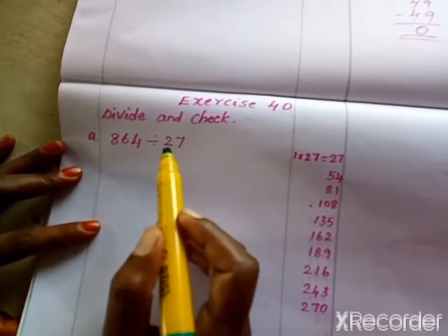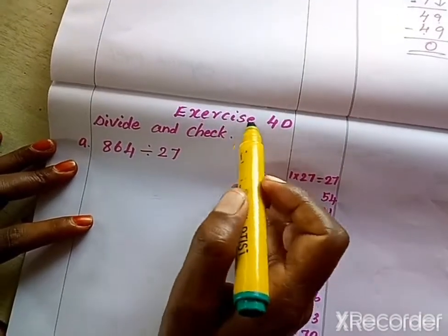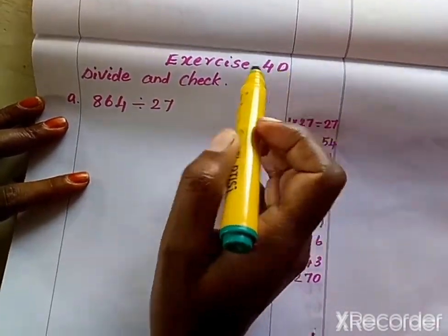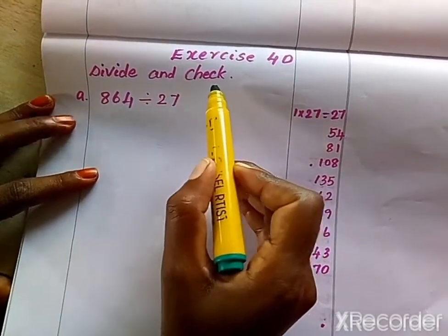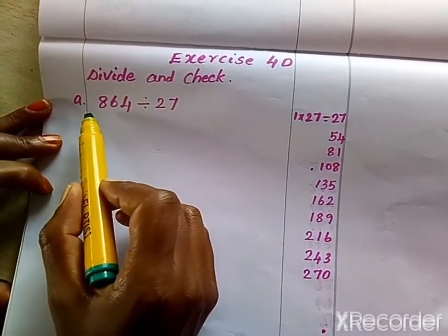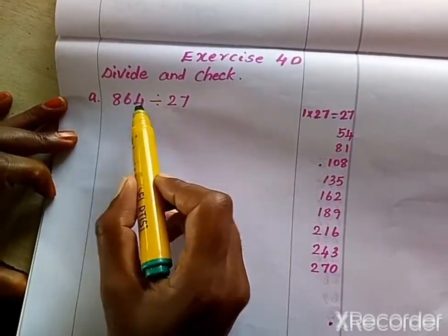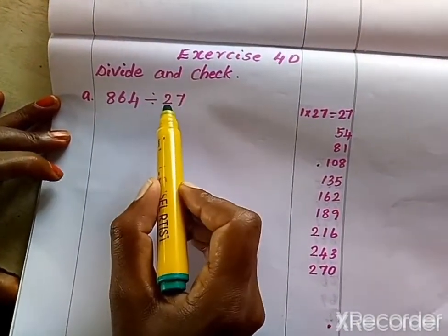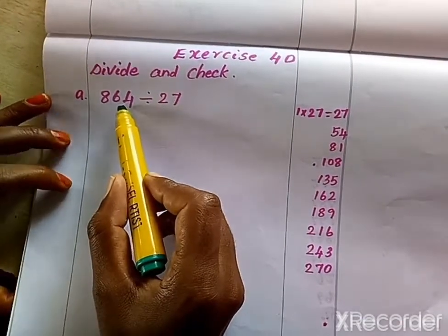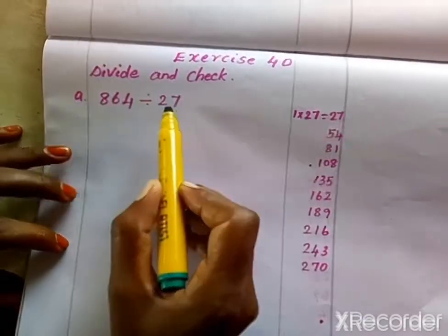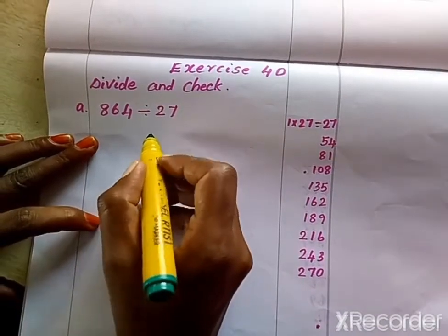Hi children. In this video we are going to discuss exercise 4D — divide and check. Look at the first problem: 864 divided by 27. Here 864 is your dividend and 27 is your divisor.